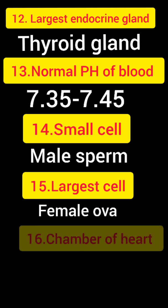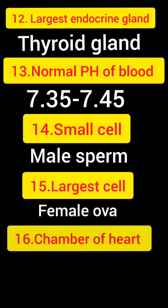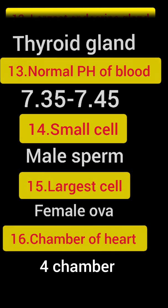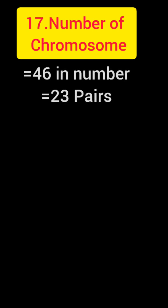Question number 16: how many chambers does the heart have? The right answer is 4 chambers. Question number 17: the number of chromosomes. The right answer is 46 in number, and 23 pairs.